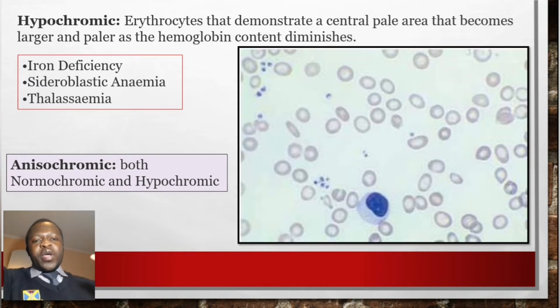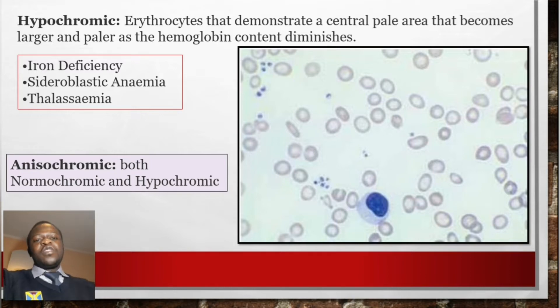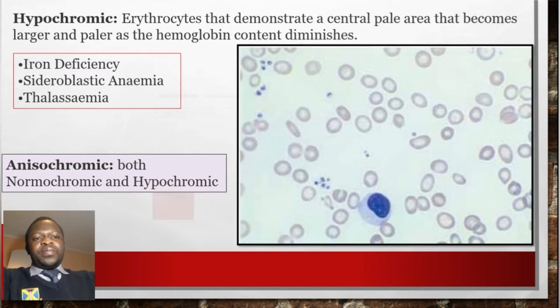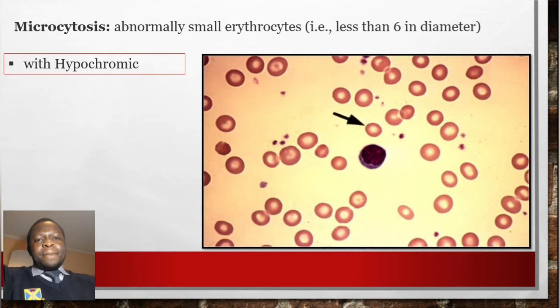Hypochromic erythrocytes are usually associated with conditions like iron deficiency anemia, sideroblastic anemia, and some thalassemias. There is another type called anisochromic, which will have a mix of both normochromic and hypochromic cells.